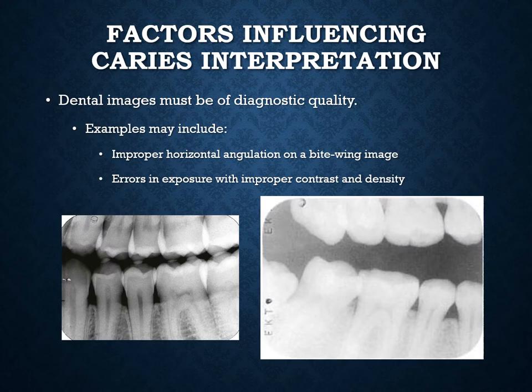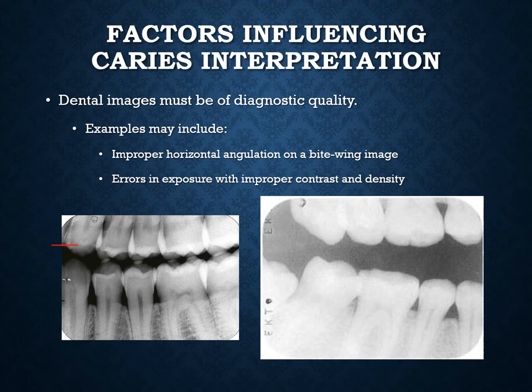Another major factor is whether the image is diagnostic. We need open contacts — we cannot see interproximal areas when contacts are overlapped, leaving a giant white blob instead. Proper contrast and density are also essential. With digital sensors you can adjust these somewhat, but with film you'd need to retake the image. Diagnostic simply means: can I diagnose cavities from this image? Incorrect horizontal angulation with overlapped contacts means you must retake that image regardless.